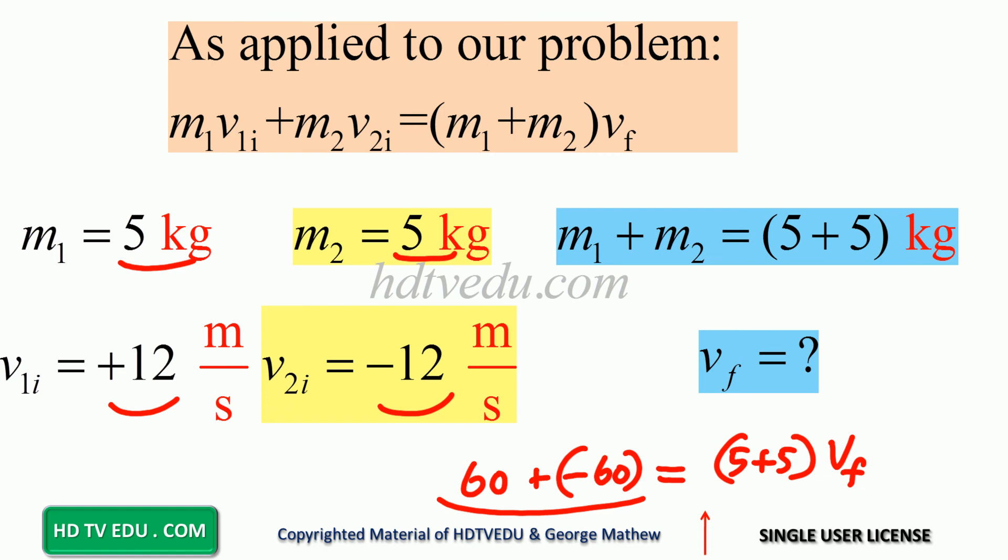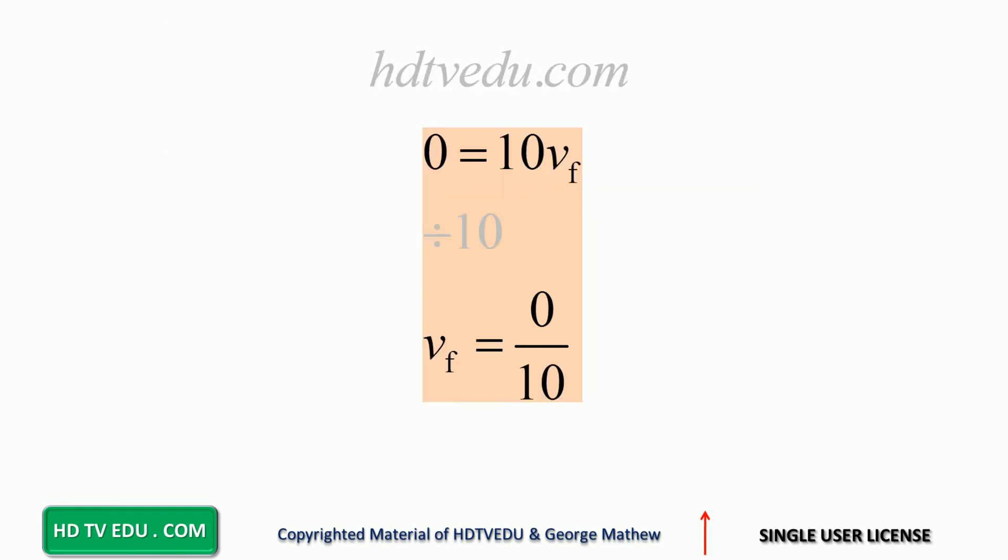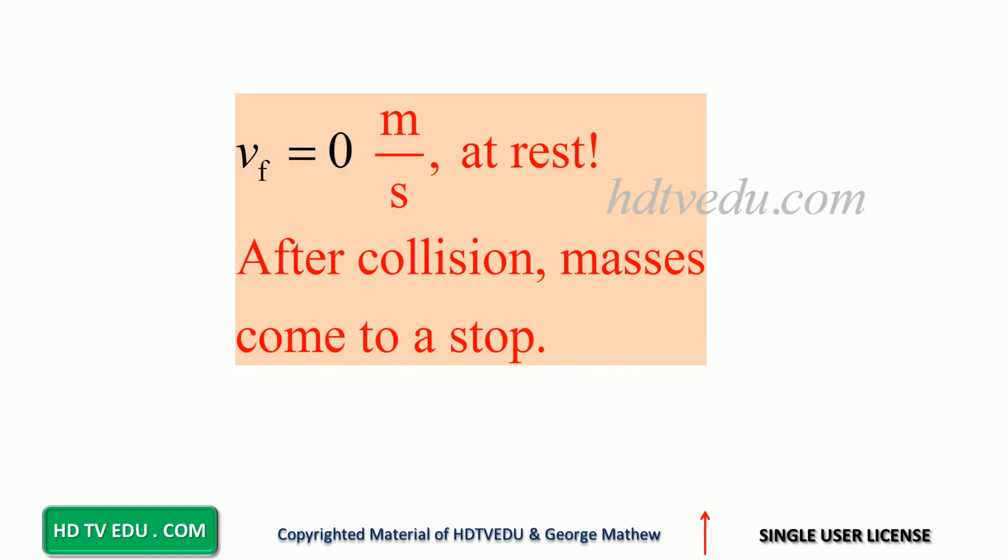So you get the final speed to be equal to 0. And 60 minus 60 equals 10 v final. Divide both sides by 10. And 0 divided by 10 is 0. So the final speed is 0.